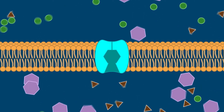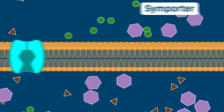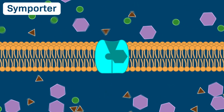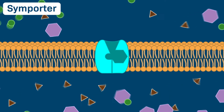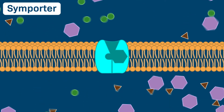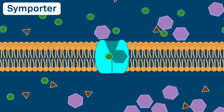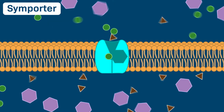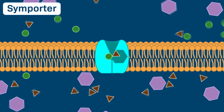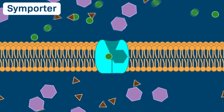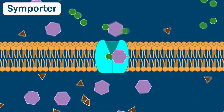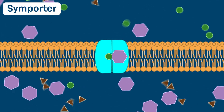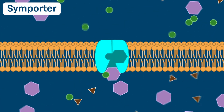Let's consider another kind of carrier protein, called a symporter. A symporter carries two types of solutes in the same direction across the membrane. In this example, the symporter ferries both the solutes represented by the green circles and the solutes represented by the purple hexagons into the cell.